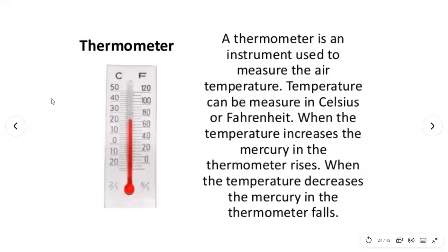A thermometer is an instrument used to measure air temperature. Temperature can be measured in Celsius, Fahrenheit, or Kelvin. When the temperature increases, the mercury in the thermometer rises; when it decreases, the mercury falls. The red spirit you see in the thermometer is the mercury.